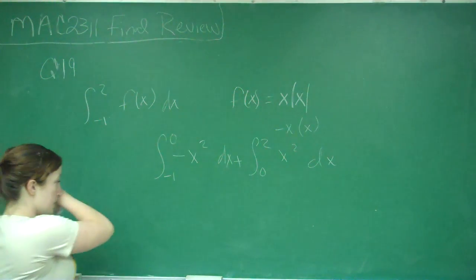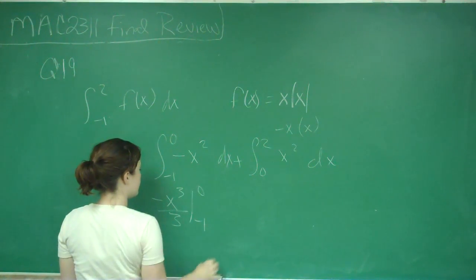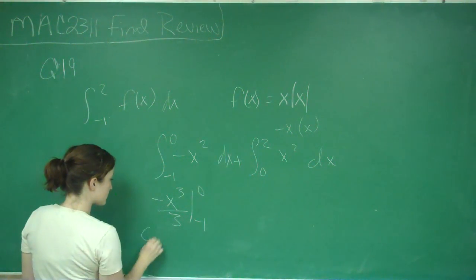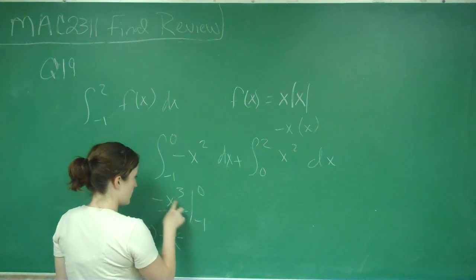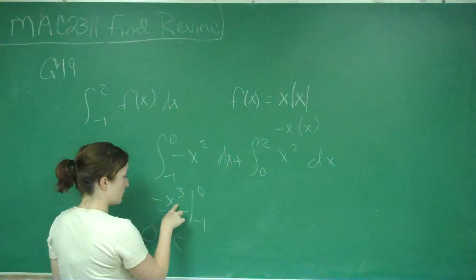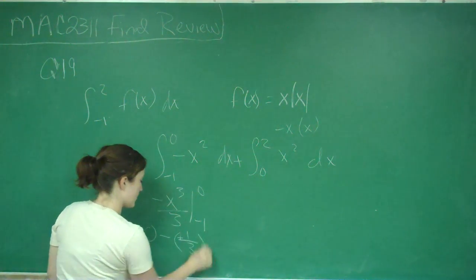And so I get negative x cubed over 3 from negative 1 to 0. So I get 0 minus a negative times a negative 1 cubed is negative 1 times a negative is positive 1, third.